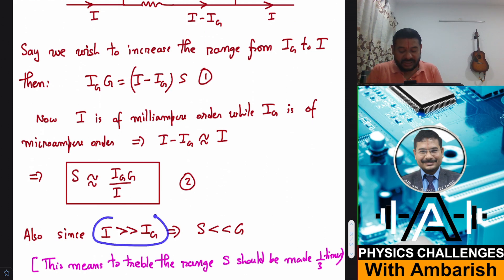So since I is much much greater than IG, I can say that shunt will also be much much less than G. Why? Because IG by I is a very small term, so shunt value is very very small as compared to the galvanometer resistance.